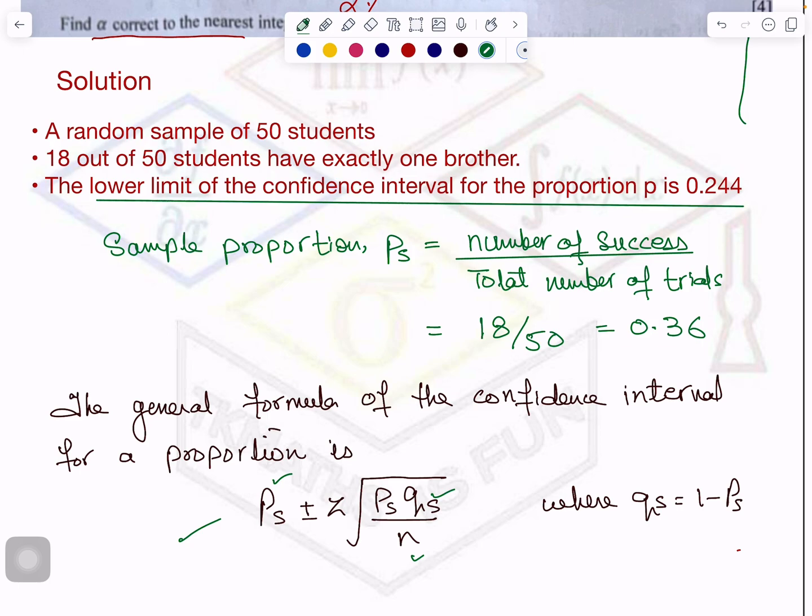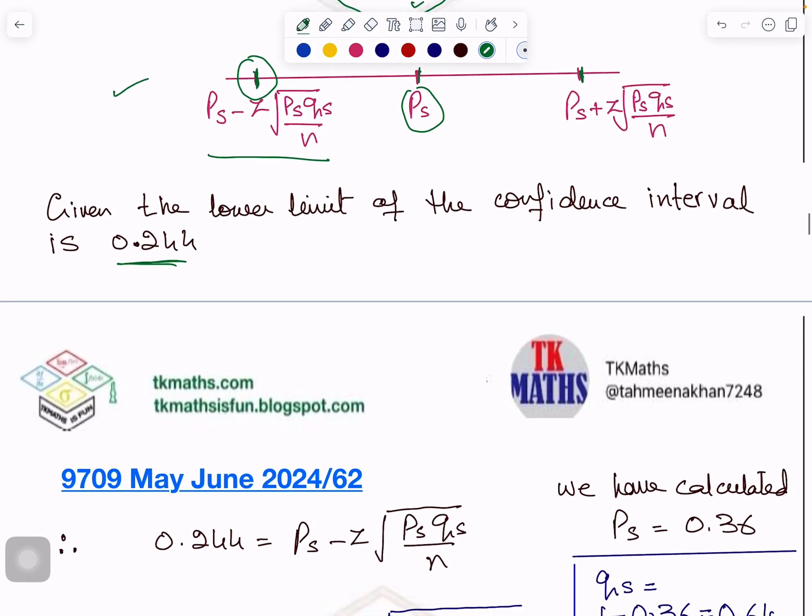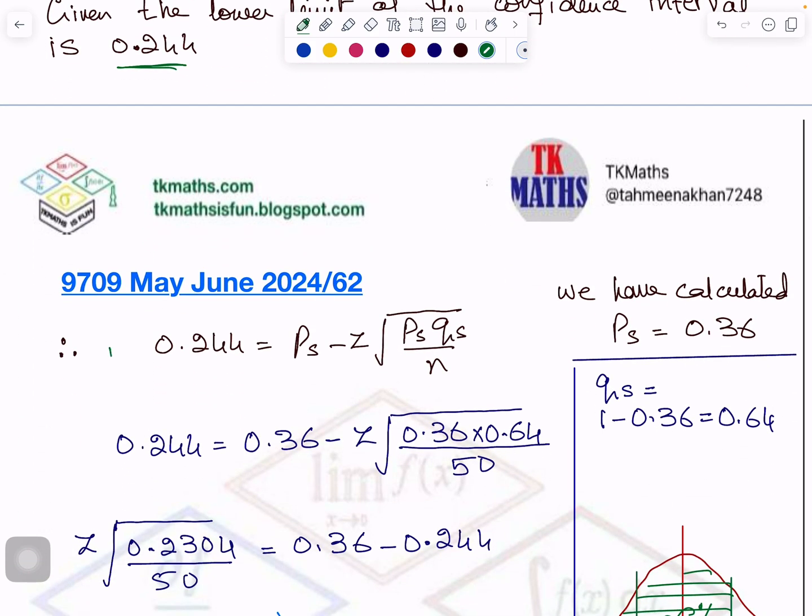Now here one other information is very important given, and that is the lower limit of the confidence interval is 0.244. So I want to explain to you here the meaning of this question with the help of a straight line. Central is proportion PS. When you minus this part from it, you get this value lower limit. And in the same value when you add this portion, you get this upper limit. So when question says lower limit, it means this part is actually given to you, 0.244. So it helps you to form an equation 0.244 equals to this, which I have done here. You can see that and after that I am simply plugging in values to calculate Z.